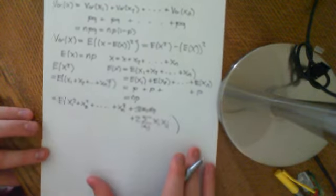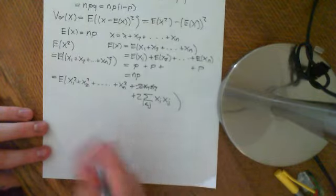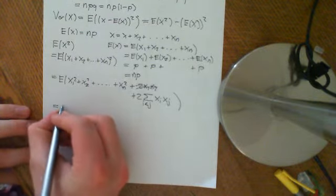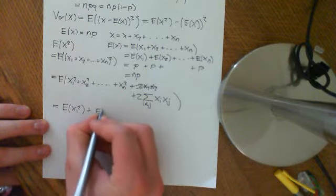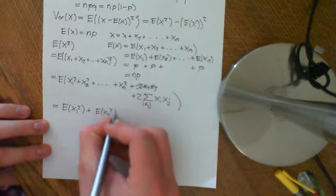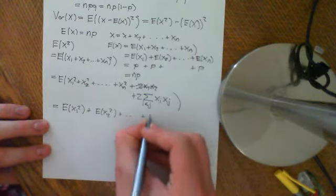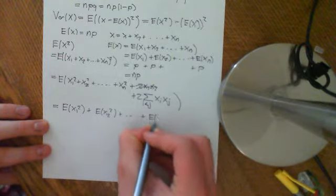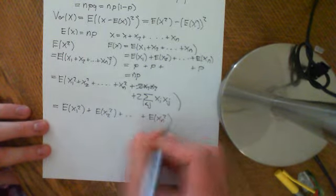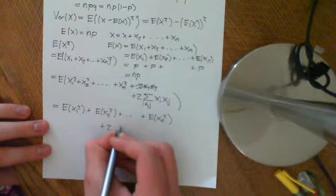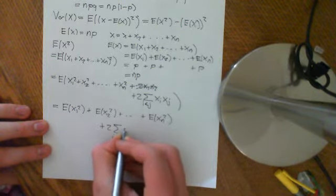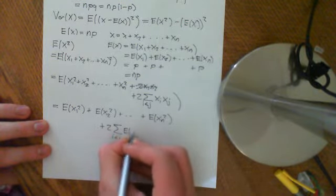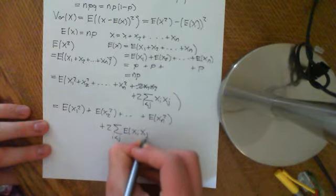By linearity of the expected value operator, we can say this is the expected value of x1 squared, plus the expected value of x2 squared, plus all the way up to the expected value of xn squared, plus 2 times the sum over i less than j of the expected value of xi times xj.